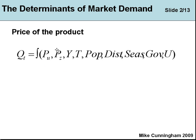Then we've got the price of related goods — PZ. So if this is the price of butter, this could be the price of bread. Y is income. In economics it's always Y — Y stands for income. The reason is that a very famous economist called John Maynard Keynes back in the 1930s called income Y as shorthand, so it stuck. Whenever we see Y in economics, we know it's income.